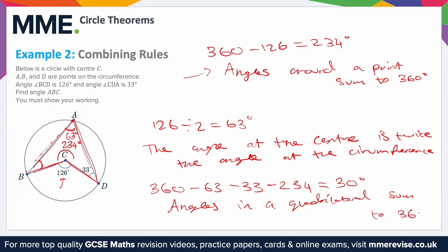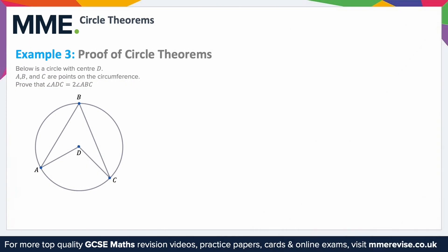Example three: proof of circle theorems. The circle to the right has center D. A, B, and C are points on the circumference of the circle. Prove that angle ADC is twice the angle ABC.